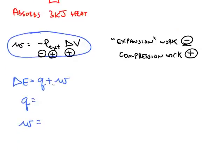So the two parts for the first law, we need Q, and Q was given in the problem that it absorbed 3 kilojoules of heat. Absorbing heat is a positive Q. So Q is a positive 3 kilojoules or 3,000 joules.